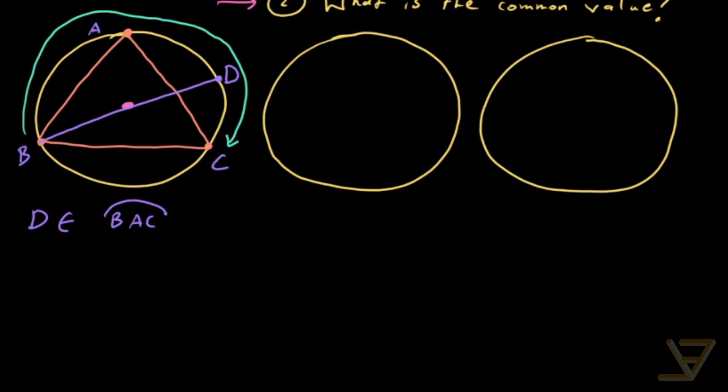The second case is where BD is a diameter itself. So we have A, B, C, but C equals D because the center of the circle is on BC.